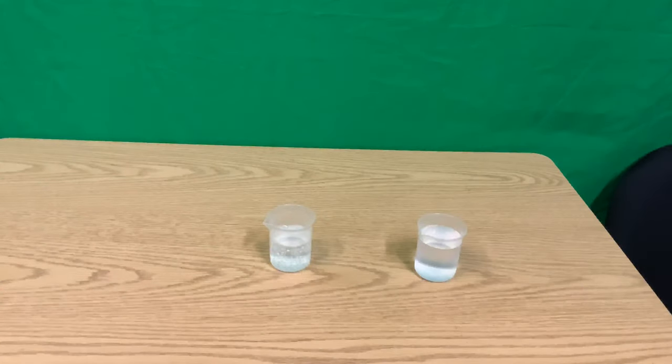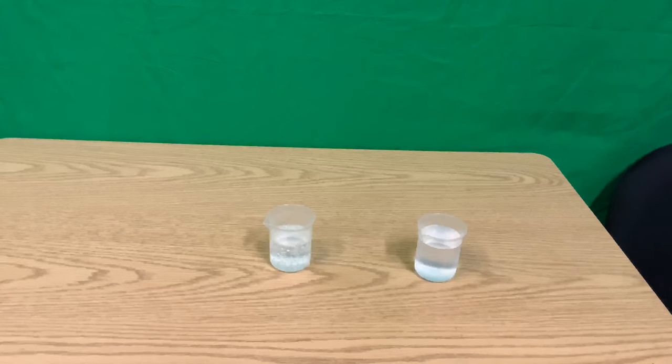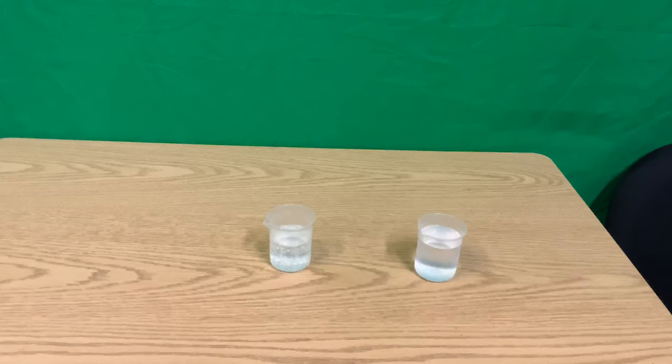First things first, we have tonic water on the left and regular water on the right. When we pass the UV flashlight over the regular water, it's going to glow purple because of the UV light, but then we'll really see glowing happen when the UV light crosses over the tonic water on the left.